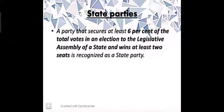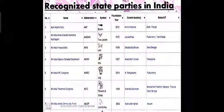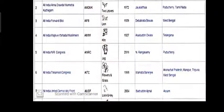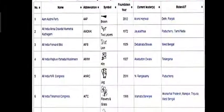A state party is one that secures at least six percent of the total votes in an election to the legislative assembly of a state and wins at least two seats — such a party is recognized as a state party. Some state parties have succeeded in becoming all-India parties. Many regional parties have supported national parties — like the Samajwadi Party, Samata Party, and the Rashtriya Janata Dal.